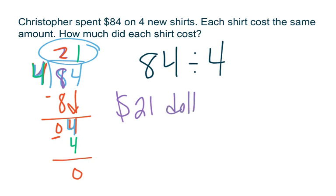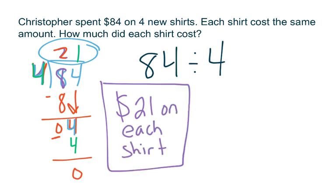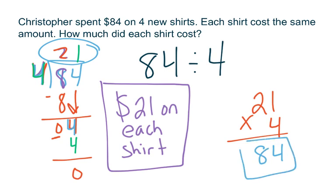Now I want to check my work with multiplication. This is a great way to make sure I'm dividing correctly. I'm going to multiply 21 as my quotient times my divisor of 4. It's a very easy way to make sure I'm getting the correct answer. 4 times 1 gives me 4 and 4 times 2 gives me 8. That simple check — that 10 to 15 seconds — is a great way for me to say I am positive that he spent $21 on each shirt.